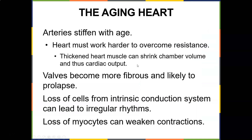As for the aging heart: arteries stiffen with age so the heart must work harder to overcome resistance. Thickened heart muscle can shrink chamber volume and reduce cardiac output. Valves become more fibrous and are more likely to prolapse. Loss of cells from the intrinsic conduction system can lead to irregular rhythms, and loss of myocytes can weaken contractions.